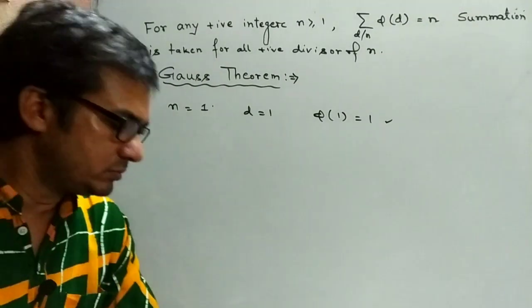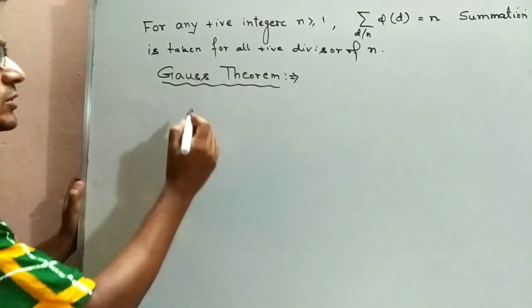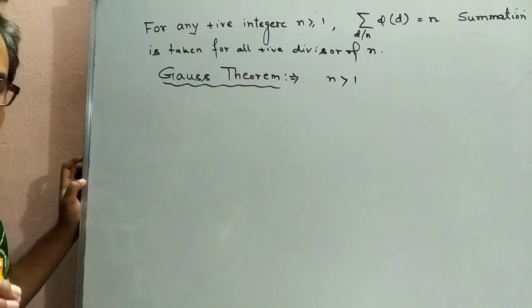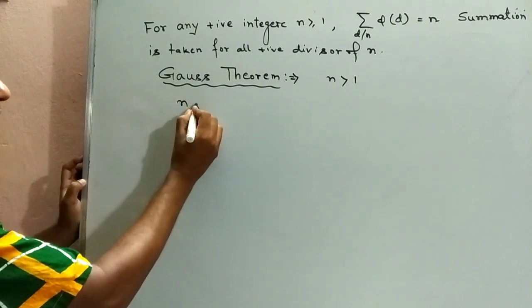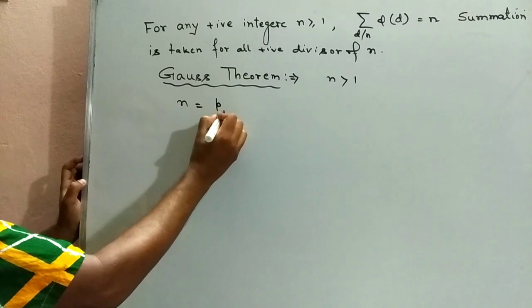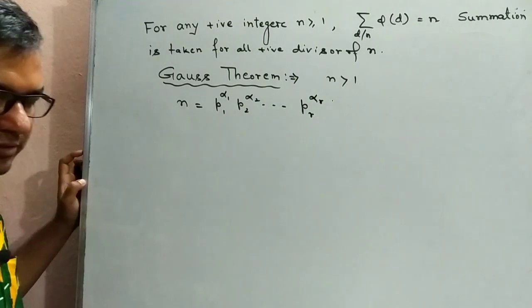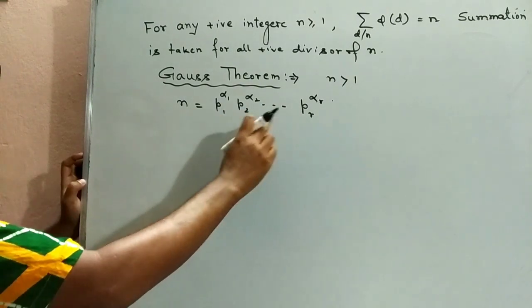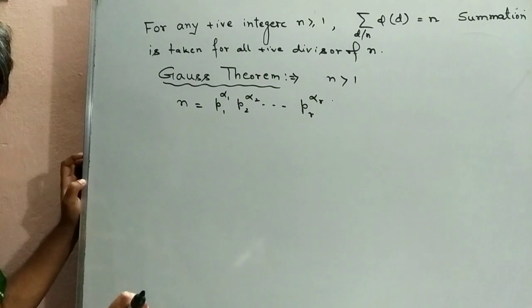Now we take n greater than 1. Then by the fundamental theorem of arithmetic, we can write any integer n in the form p1^alpha1 · p2^alpha2 · … · pr^alphar, where p1, p2, …, pr are distinct prime divisors of n and alpha1, alpha2, …, alphar are all non-negative integers.